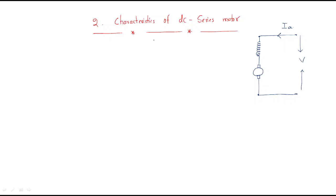In this session we will discuss the characteristics of the DC series motor. The DC series motor has an armature and a series winding. The series winding produces the series flux, and it takes electrical power. Voltage is constant, so we can write it as electrical power which produces mechanical power.